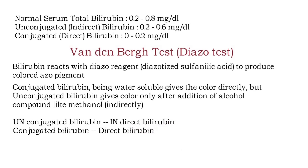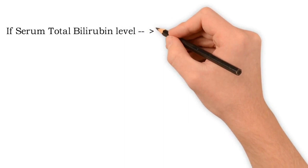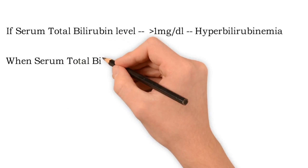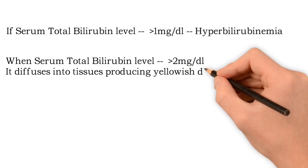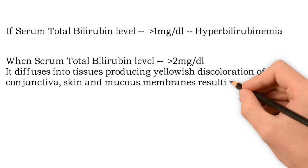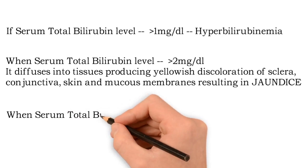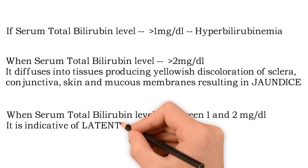These indirect and direct bilirubin terms are used in clinical practice. If the serum total bilirubin exceeds 1 mg per deciliter, the condition is called hyperbilirubinemia. When this level is more than 2 mg per deciliter, it diffuses into the tissues producing yellowish discoloration of the sclera, conjunctiva, skin, and mucous membrane, resulting in jaundice — clinically called icterus. If serum total bilirubin is between 1 and 2 mg per deciliter, it indicates latent jaundice.